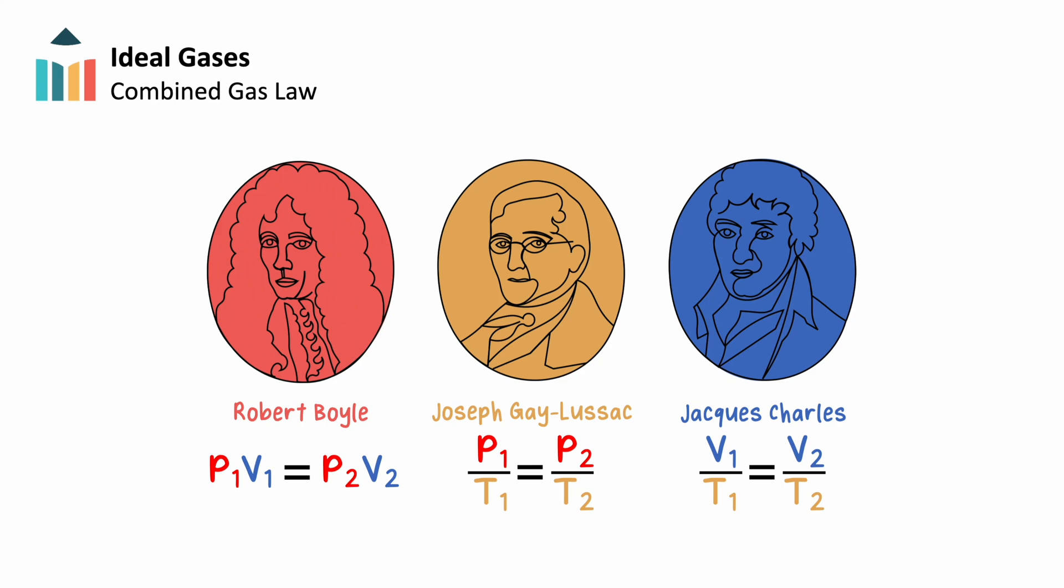The combined gas law brings these three relationships together into a single equation: P1 V1 over T1 equals P2 V2 over T2. This equation is particularly useful, as it allows us to predict the new state of a gas given its initial conditions and any changing variables.